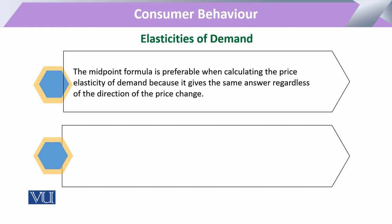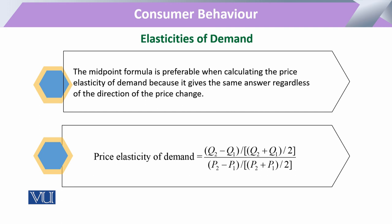If we are to measure the elasticity of demand, the best formula to use is called the midpoint formula. This midpoint formula tells us that in shifting from point 1 to point 2, the change in quantity is divided by the average quantity, and likewise the change in price divided by the average price — this gives us a better way to calculate the price elasticity of demand.